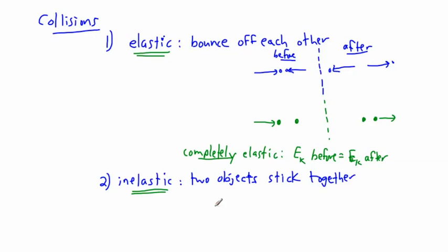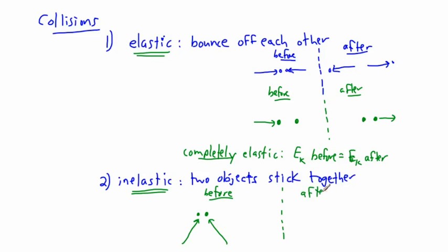In a completely inelastic case, we might have object one coming in and object two coming in from the other side. After the collision, they move together at some velocity. We normally deal with these two extremes: completely elastic — where they totally bounce off each other, or one stops and the other moves off — or completely inelastic, where they stick together.